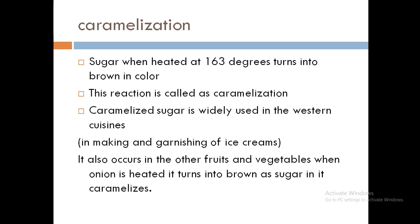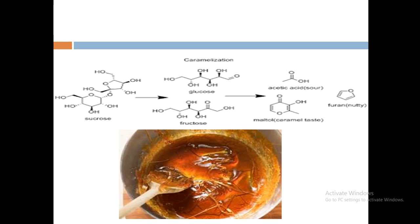Caramelization also occurs in other fruits and vegetables. When onion is heated, it turns brown in color as the sugar in it gets caramelized. Here is the chemical structure — you should know the proper temperature at which sugar gets caramelized and the correct definition of caramelization. You can see the sugar caramelizing; this is called caramel, and food technology students make toffees and candies out of caramelized sugar.